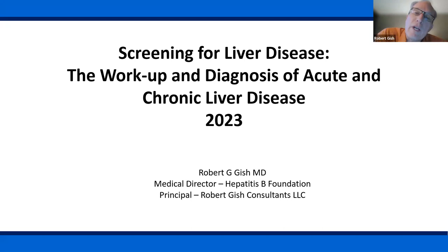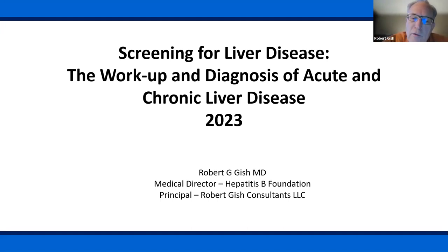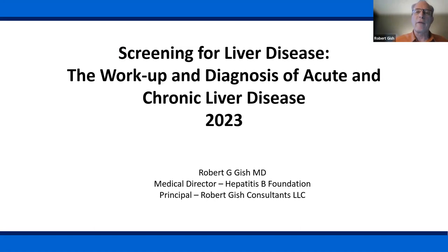We're going to talk about the basics of working up liver disease, but in the basics there are some very advanced comments. I'm not going to talk a lot about coronavirus, but people with chronic liver disease have a higher mortality rate, especially those with cirrhosis who get corona infections. Corona can worsen liver disease both directly through viral interactions, as well as through drug side effects and drug-drug interactions.